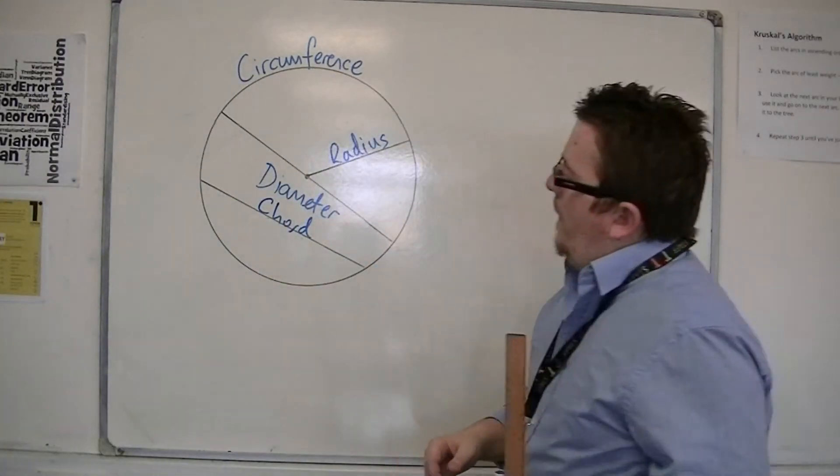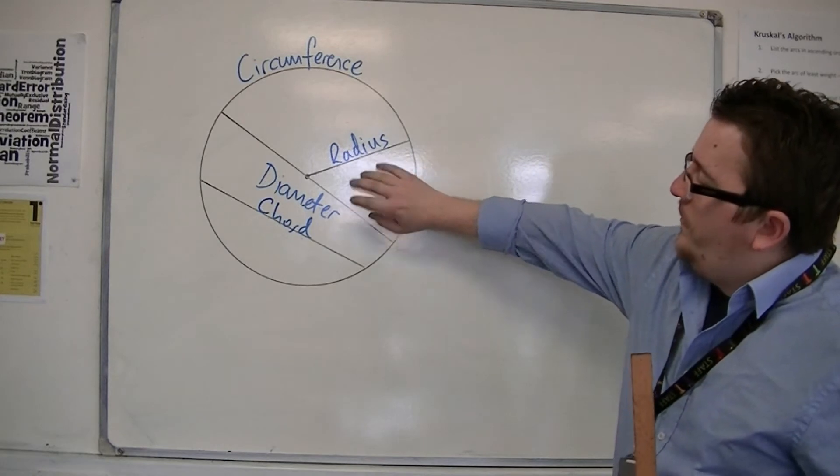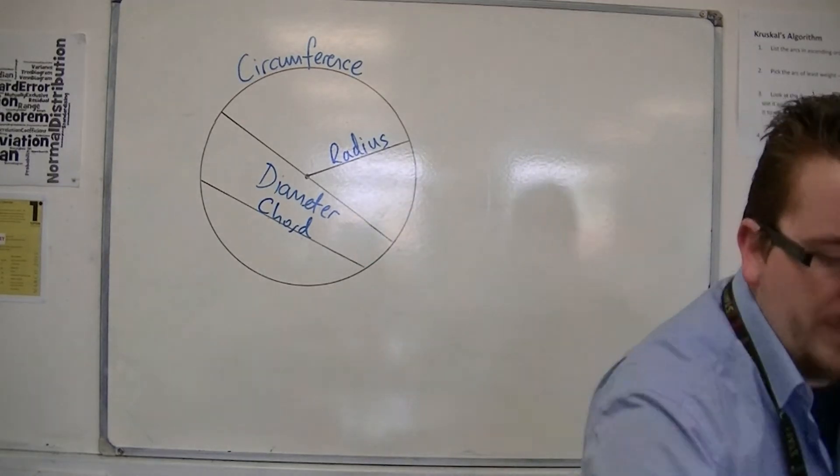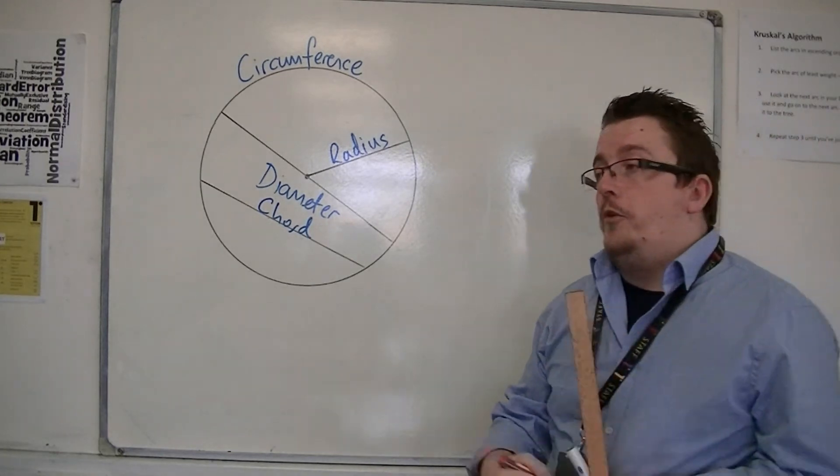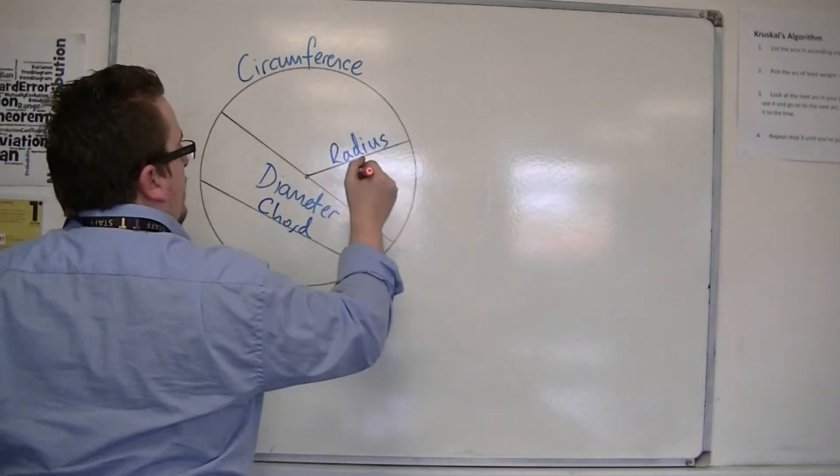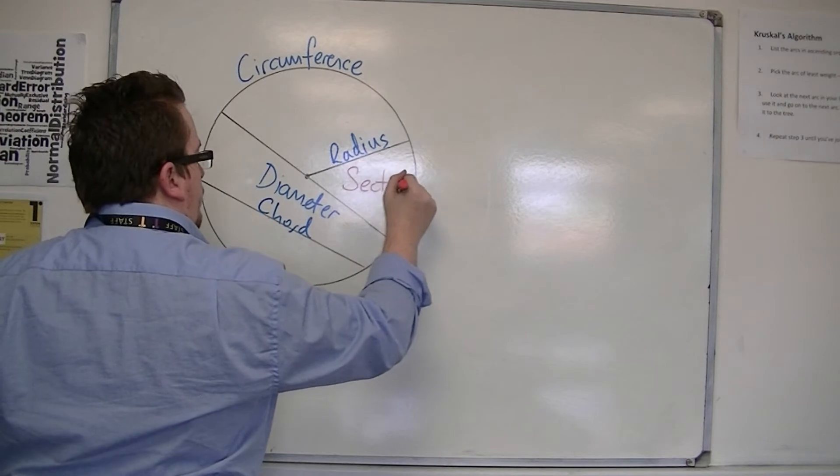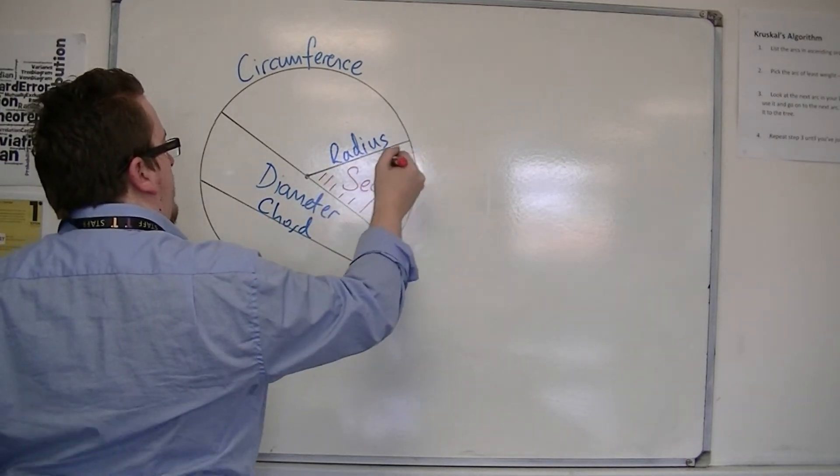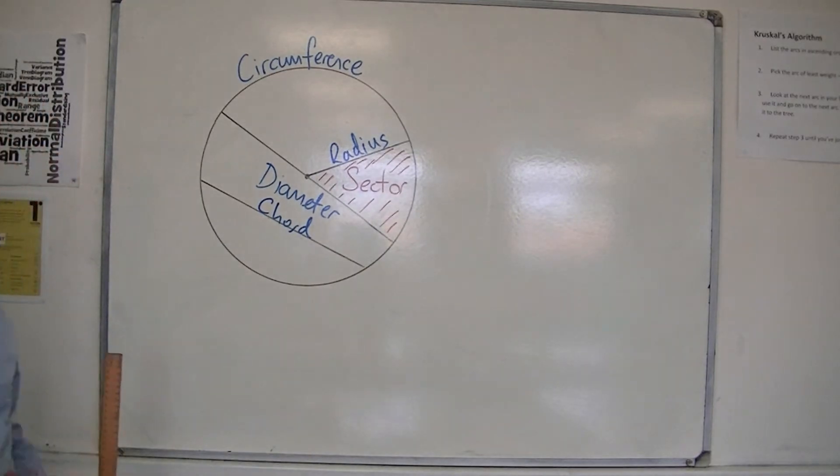Now, how about this area here, this slice of the pizza? This is referred to as a sector. So a sector is this area. It's not a length or a line, it's an area.